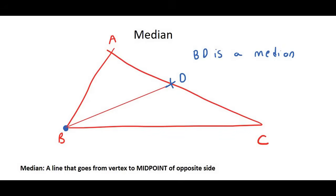If for example I wanted to start at vertex C, then I would put a little point at C and then I would go towards the opposite side which is AB and I would cut it exactly in half. And then we could label this E, for example, and then we could say that CE is a median.